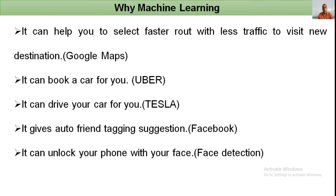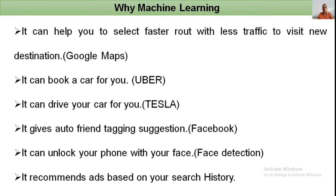Machine learning recommends ads based on your search history. If you are interested in buying a product and search for it on Google or Amazon, the machine records your search history and similar product ads will appear the same day or the next day. This is also a machine learning technique.